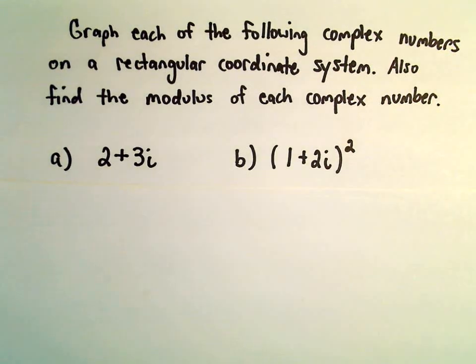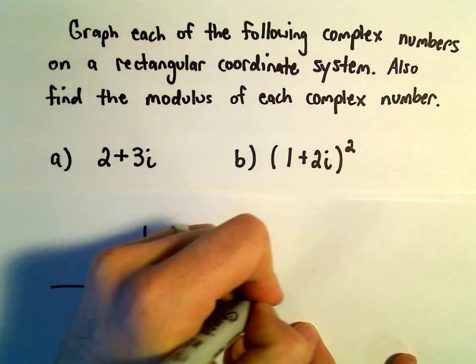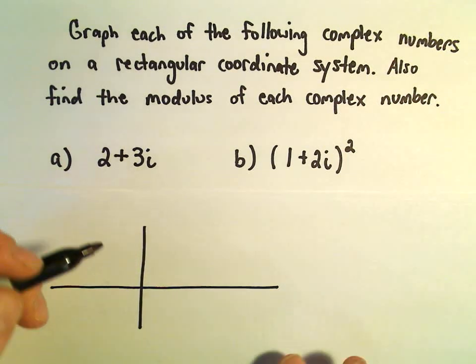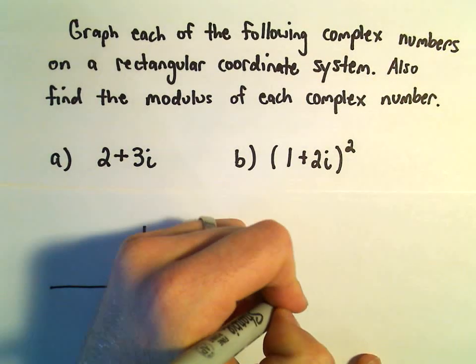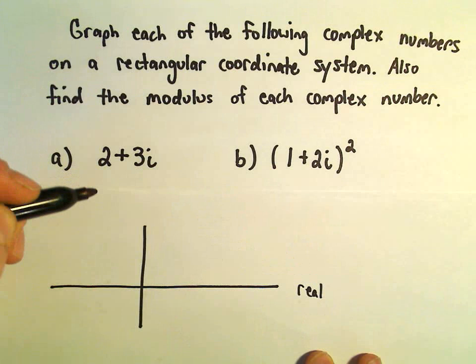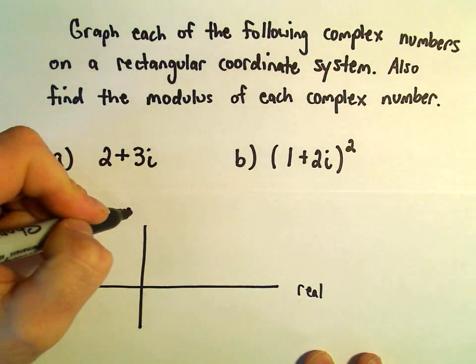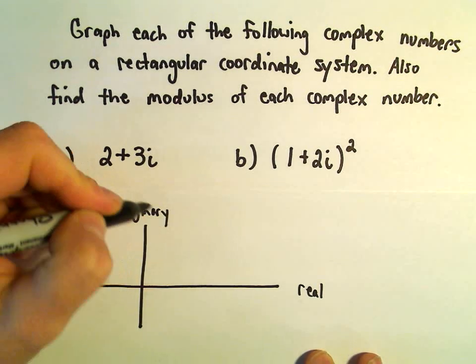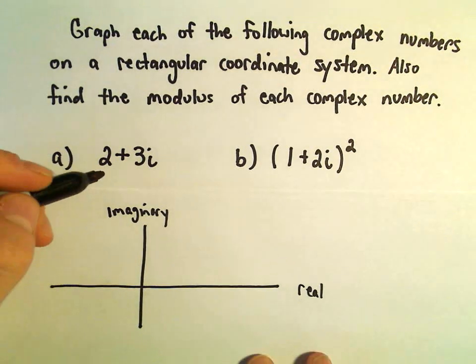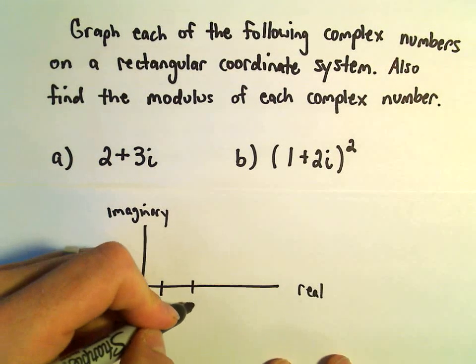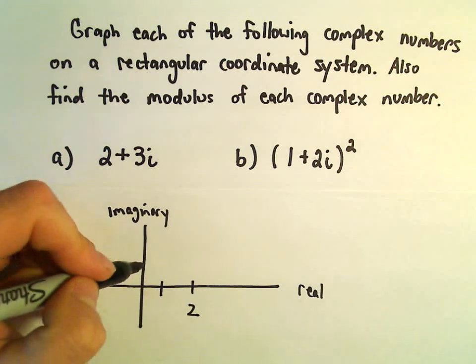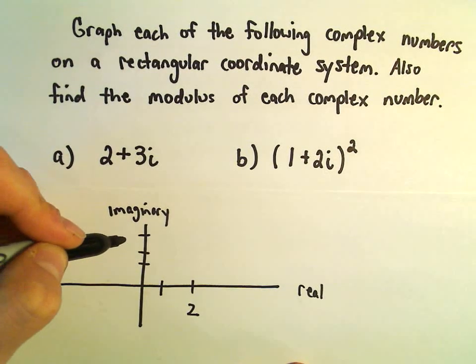Graphing is pretty easy. We think about the x-axis as being the real part and the y-axis as being the imaginary part. So at 2, that's our real part. The imaginary part is up here at 3.